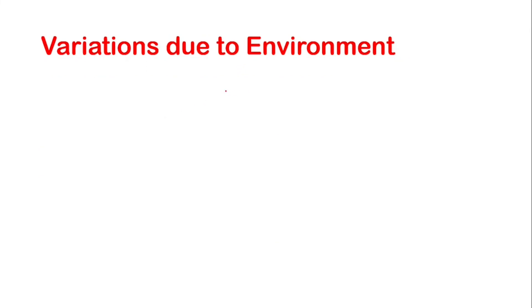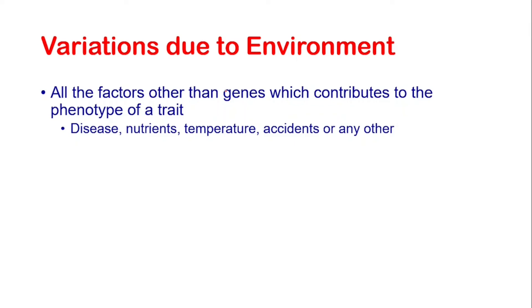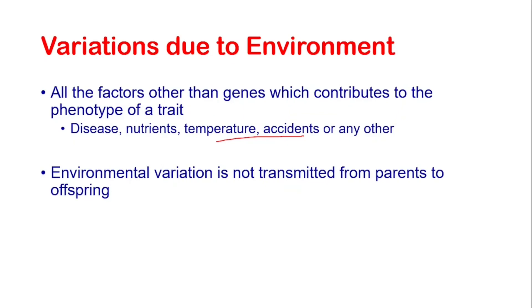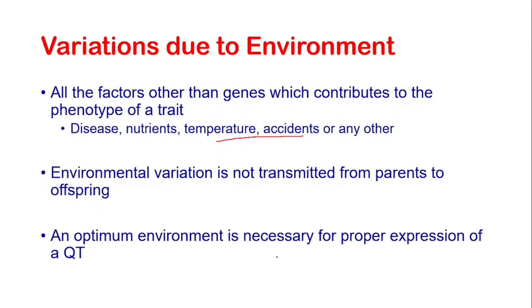Now I will talk about the other major factor which causes variation in quantitative traits — that is environment. In a genetics context, environment is defined as all the factors other than genes which contribute to the phenotype of a trait. These factors might be disease, nutrients, temperature, accident, or any other thing which could contribute to the phenotype of a particular trait. The phenotypic variation in quantitative traits due to environment is also very important, firstly because the variation caused by environment is not transmitted from parents to offspring, and secondly because a quantitative trait can only be properly expressed if an animal is provided with an optimum environment.